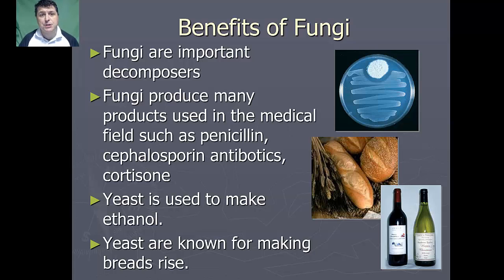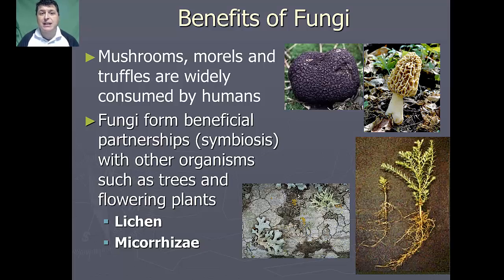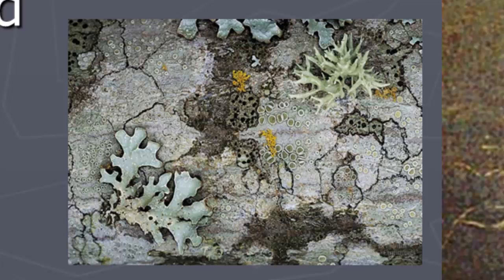The fermentation by yeast of things like juices can produce wine. Mushrooms, morels, and truffles are widely consumed by animals and humans alike. Fungi also form beneficial partnerships or symbiosis with organisms like trees and flowers. A symbiotic relationship between a fungus and an algae forms lichen. Lichen can grow on rocks and trees and are pioneer species helping to build up soil, break down rocks, and are a major component of ecological succession.